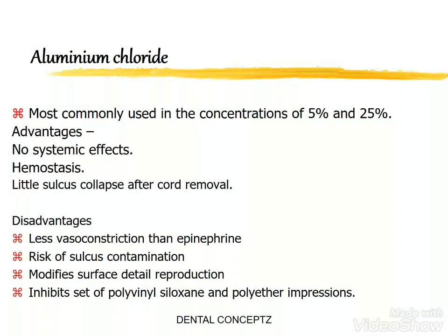Aluminum chloride is most commonly used at concentrations of 5% and 25%. Advantages are that it does not cause any systemic effect, it provides hemostasis, and there is little sulcus collapse after cord removal. Disadvantages are that it provides less vasoconstriction than epinephrine, there is risk of sulcus contamination, it modifies surface detail reproduction, and it inhibits the set of polyvinyl siloxane and polyether impressions.